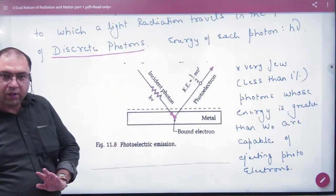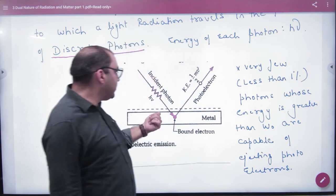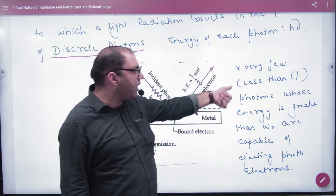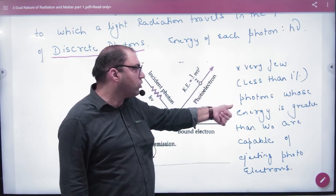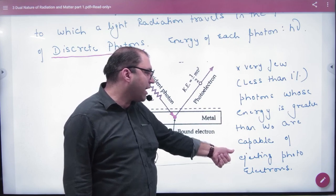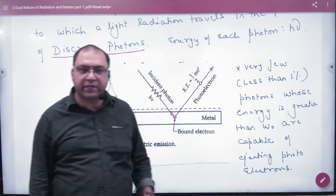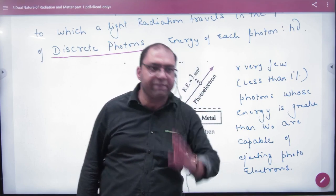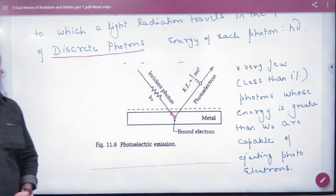Each photon has energy hν. He explained that very few incident photons, less than 1% of photons whose energy is greater than the work function, are capable of ejecting photoelectrons. With only about 1% efficiency, there won't be many photoelectrons emitted.